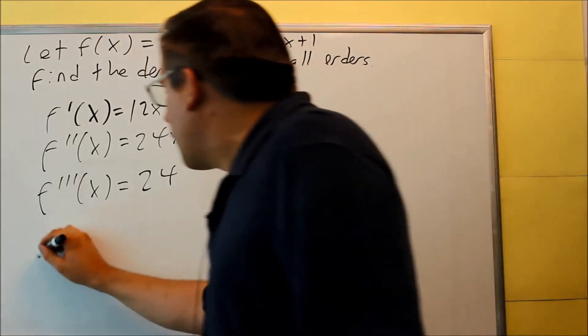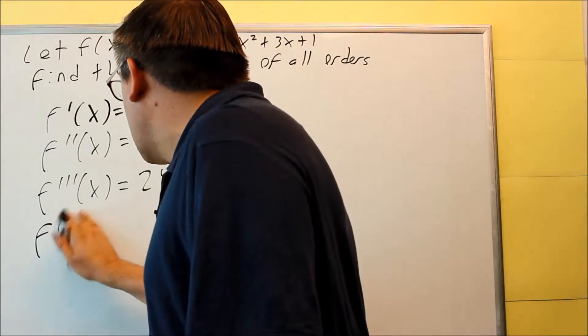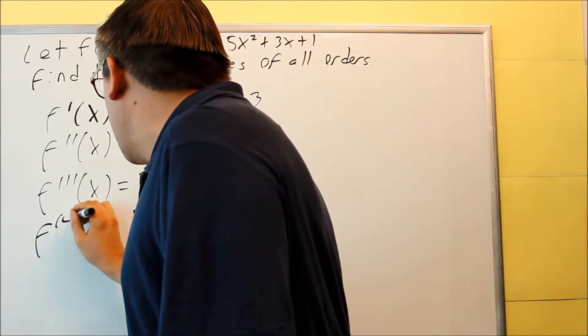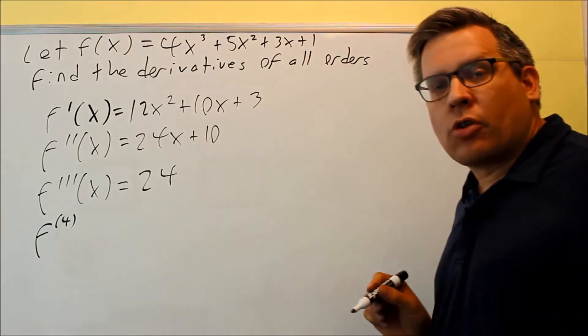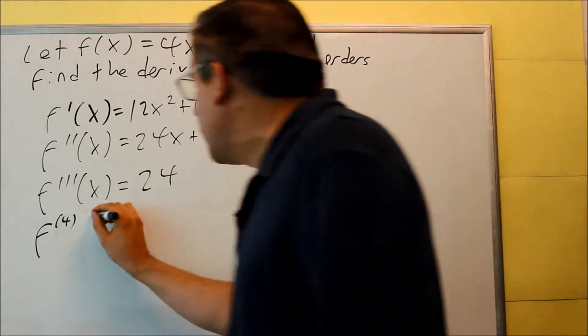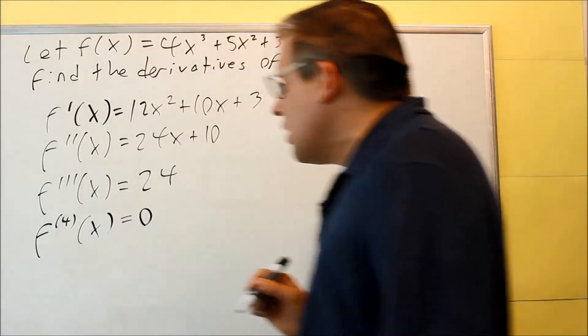Derivative of 10 is zero. And then finally, we get down here and you would write it this way. Usually after three primes, you just start writing the number down there. So we have the fourth derivative and then that's going to be zero.